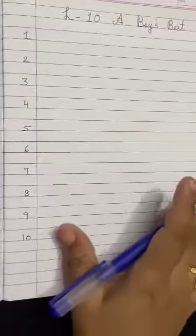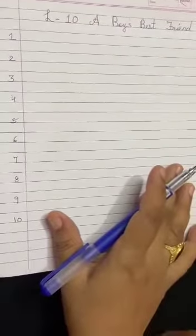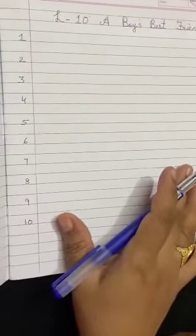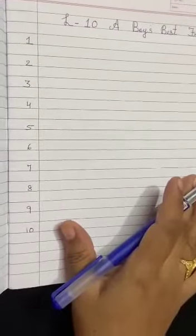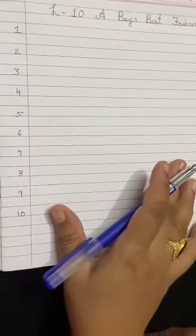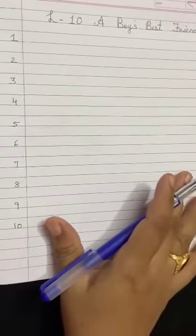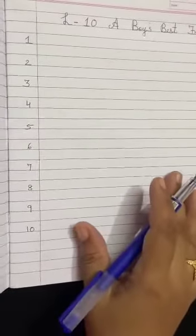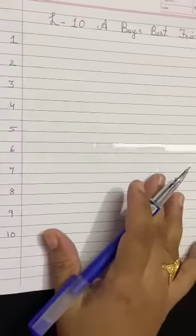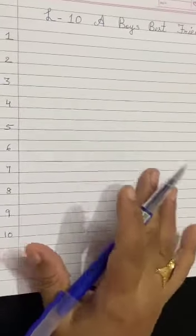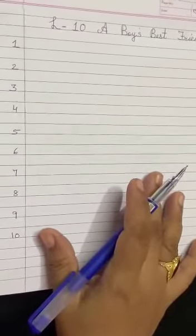Now after writing all the dictation words, parents are requested to check the book. If the word is right, give one mark. And if the word is wrong, give zero marks. After checking all the dictation words, write the total in the index. The answer key will be sent to you. Thank you.